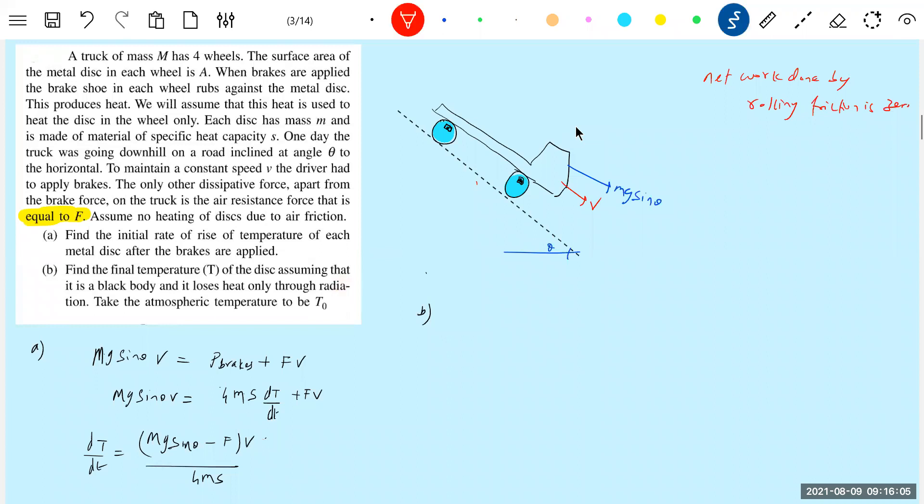It will have temperature T, surrounding temperature is say T0. Now this will become sigma area of cross section, as given, metal disc in each wheel is sigma A, T to power of 4 minus T0 to the power of 4. This should be equal to mg sin theta minus F into V.